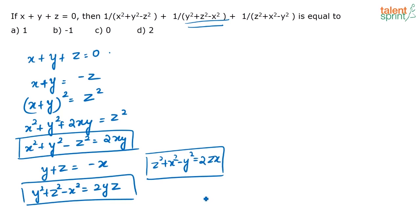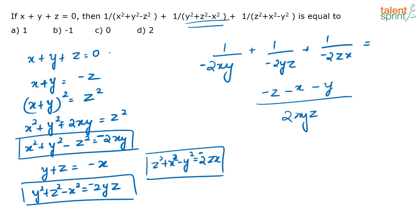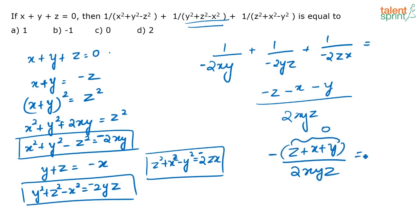Now just substitute these values. You will have 1 by (-2xy) plus 1 by (-2yz) plus 1 by (-2zx). Taking LCM, which is 2xyz, the numerator becomes -z - x - y, or taking the minus outside: -(z + x + y) divided by 2xyz. But z + x + y = 0, so the answer is 0.